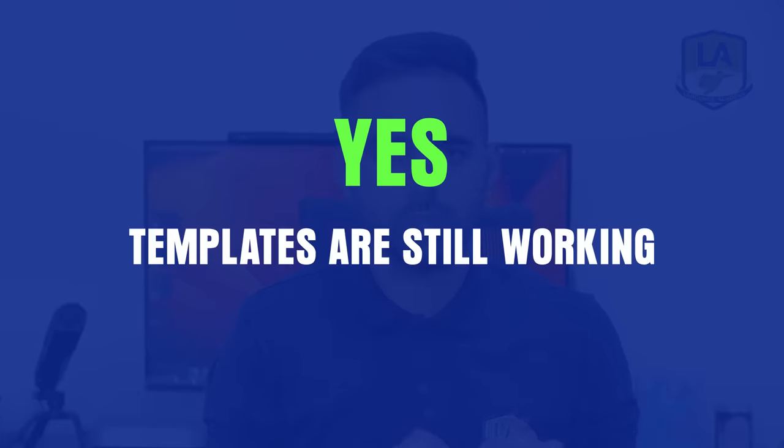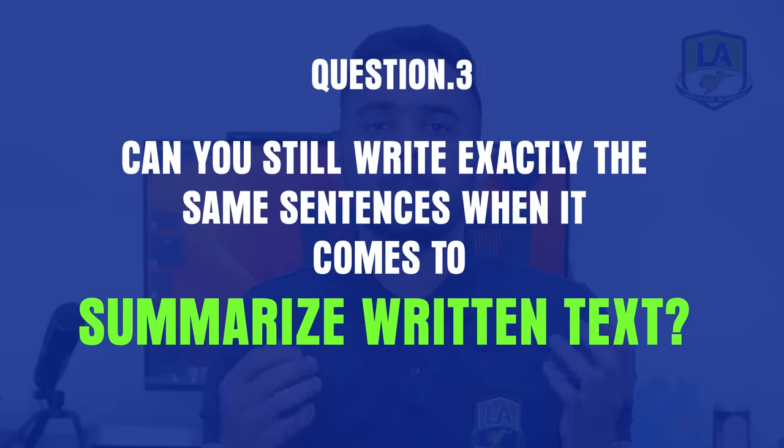In Summarize Spoken Text, you should have around seven to eight keywords from the lecture with correct spellings. In Essay, you need relevant keywords plus all the keywords from the essay topic in your answer. For example, if the essay topic is 'Television plays an important role in spreading news in the world,' the key words are television, important role, news, and world — make sure all of those appear in your response. Templates are still working, but be careful about adding content and keywords.